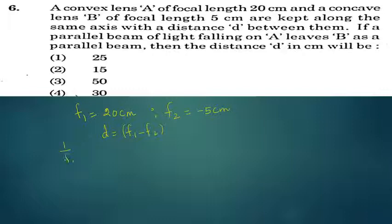1 by f1 plus 1 by f2 minus d by f1 f2 equals 1 by F. F is the combined focal length. f1 and f2 are individual focal lengths. d is equal to f1 f2.